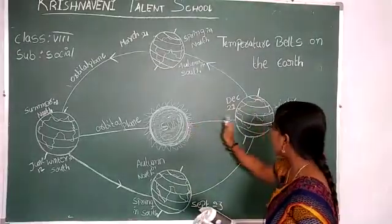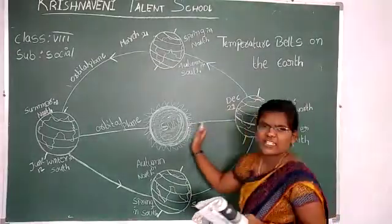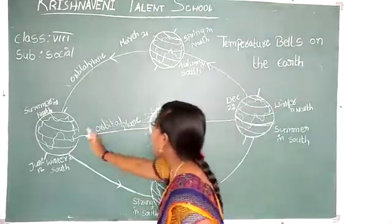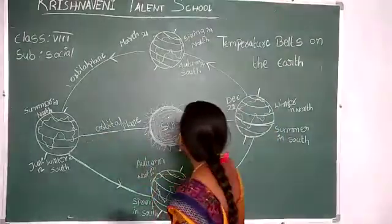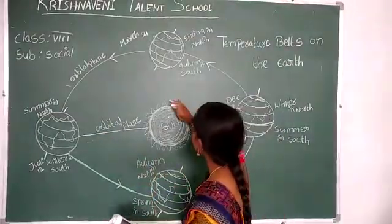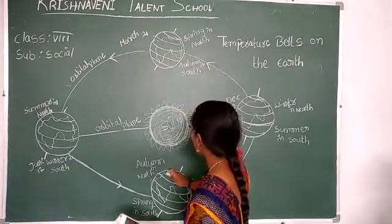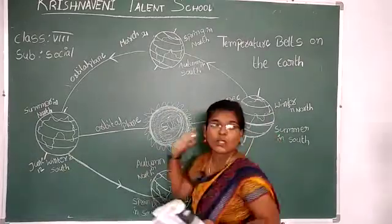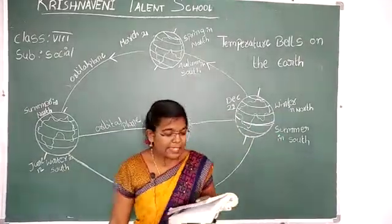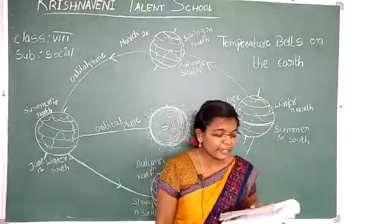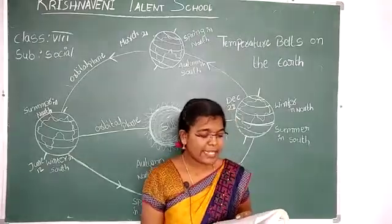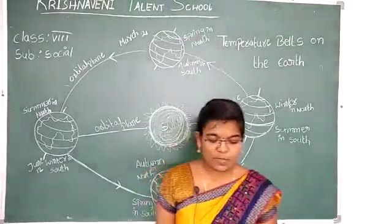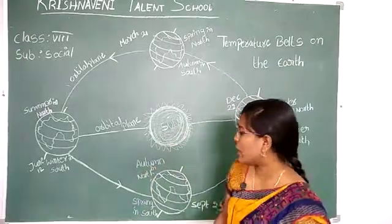The areas that receive direct sun rays are hotter, while the remaining parts are cooler. As a result of the tilt of the axis, the area which faces the sun directly keeps shifting throughout the year.